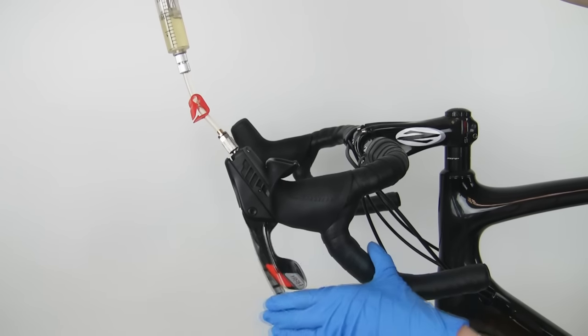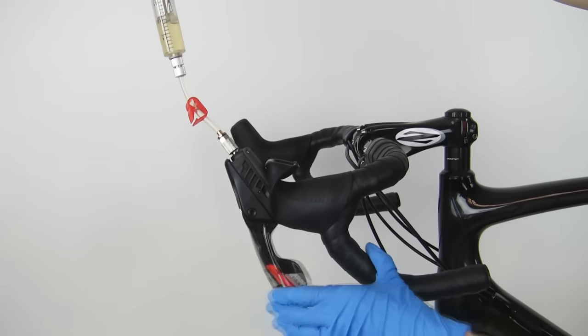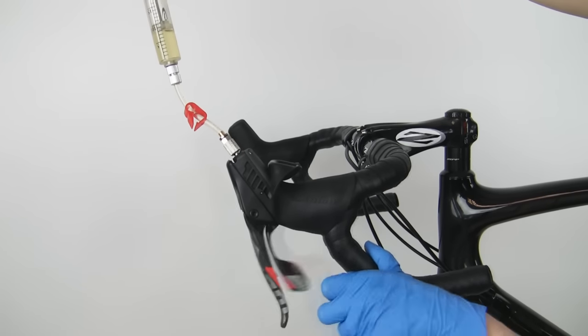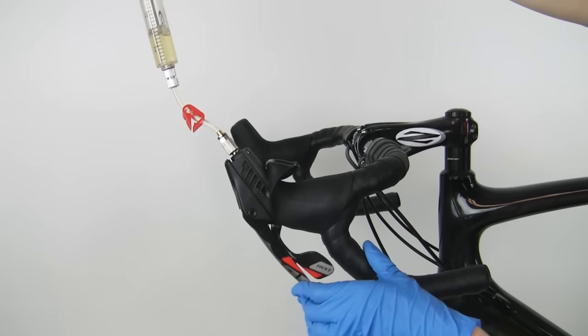Squeeze and release the brake lever ten times, allowing the lever to snap back to its starting position. Repeat this procedure several times until large bubbles stop coming out of the lever.